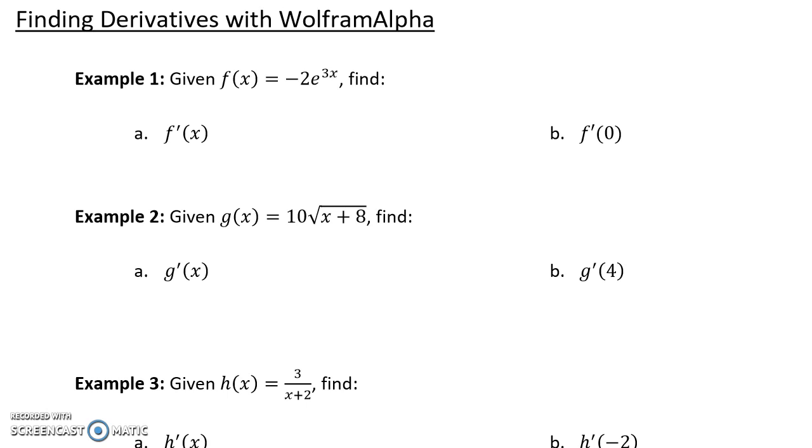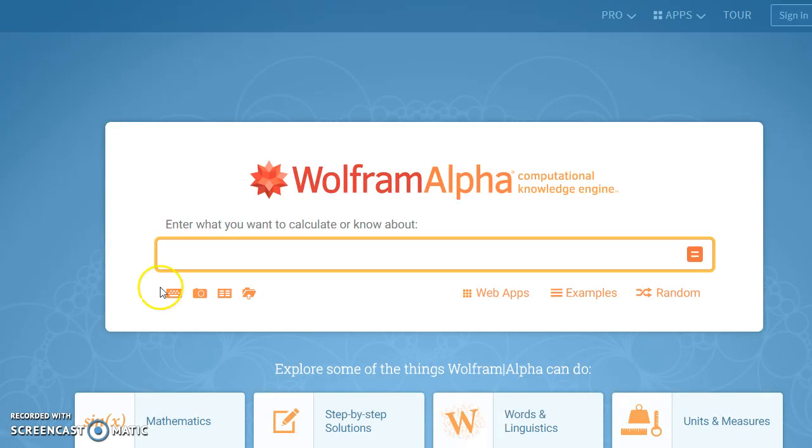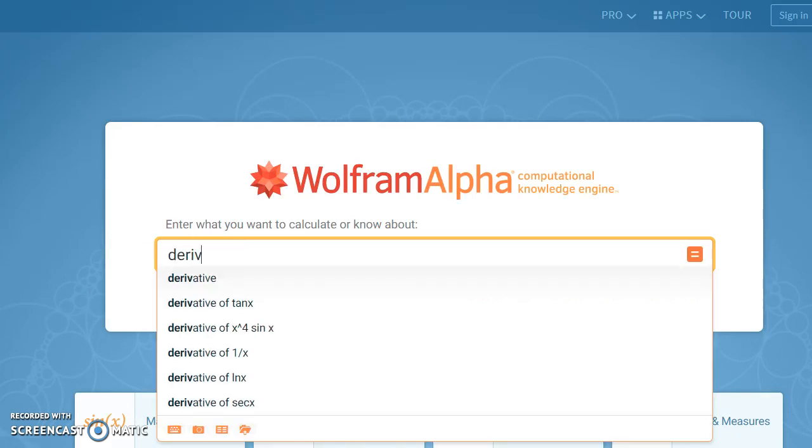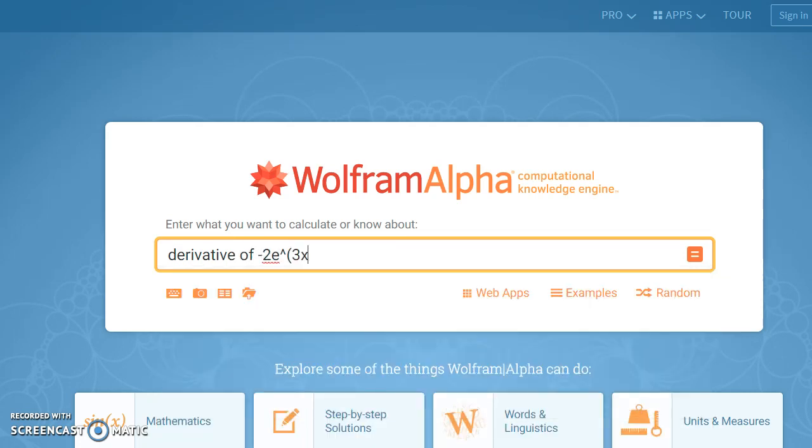In example 1, we want to find the derivative of negative 2 times e to the 3x. There are a couple of different ways to do this. One, since WolframAlpha is fairly intuitive, we can just tell it we want to find the derivative of that given function, making sure we put that 3x in parentheses so that it understands that entire expression is part of the exponent.